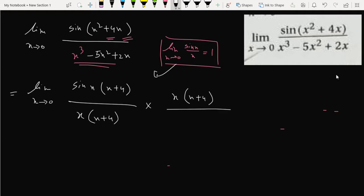Now I am breaking the limit into two parts. That is, limit x tends to zero of x times x plus four.